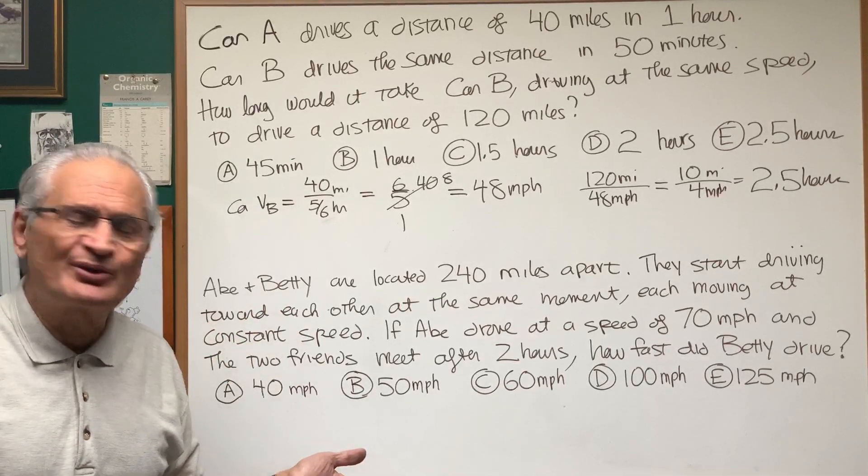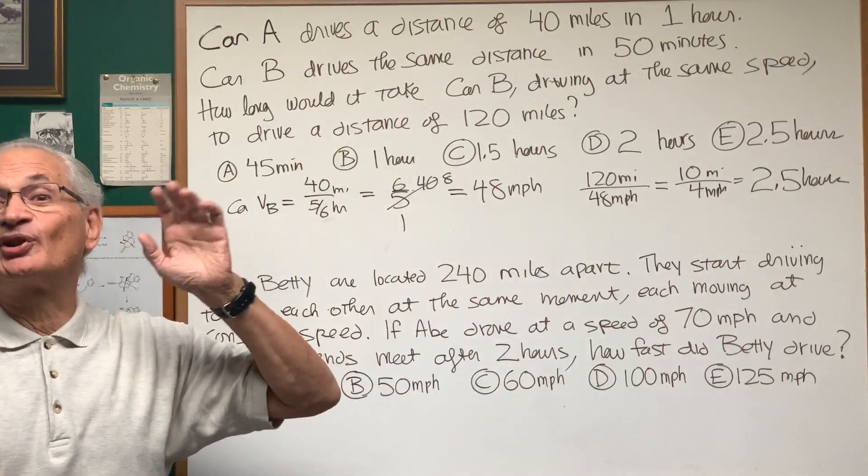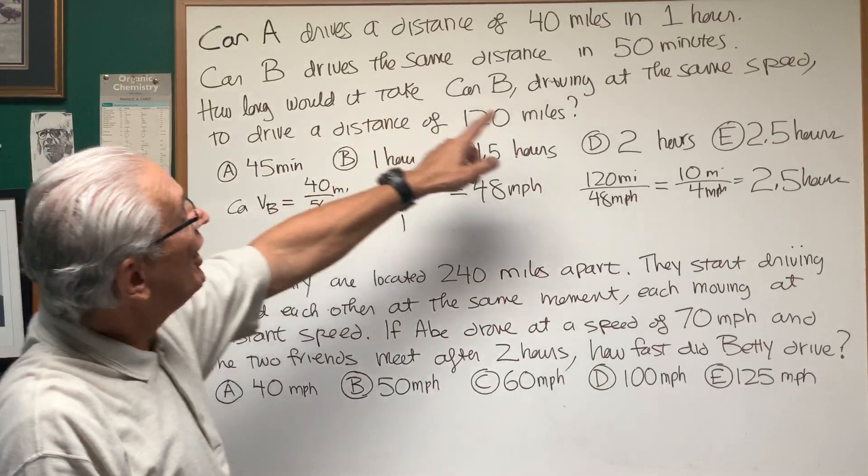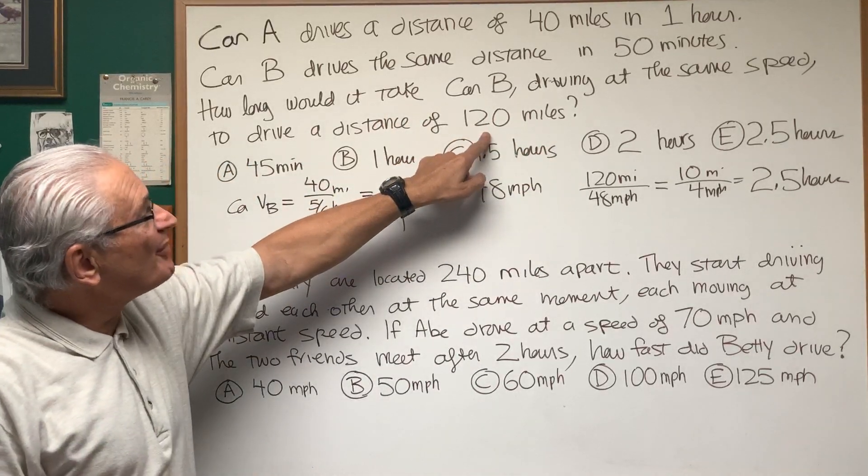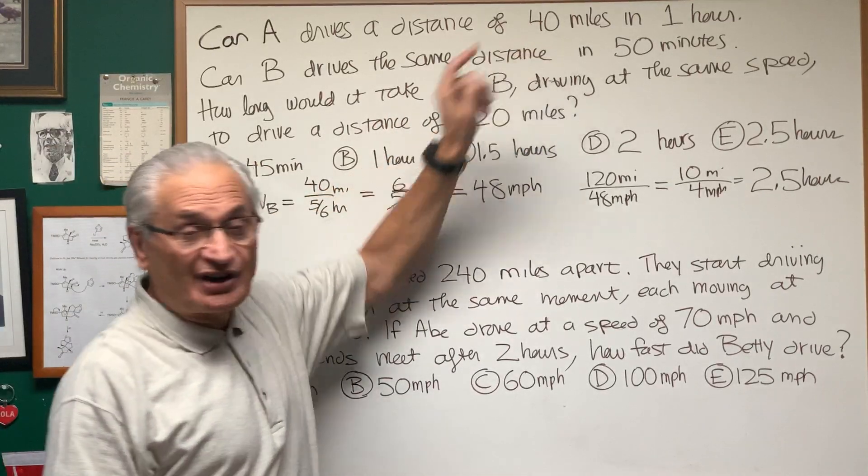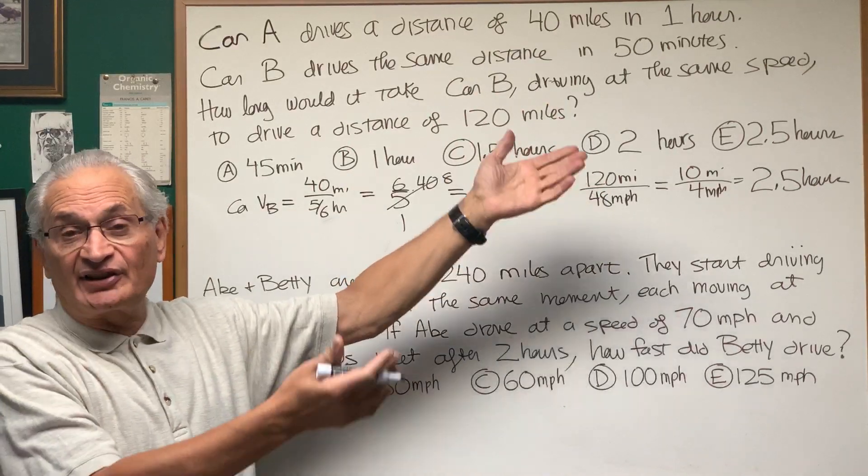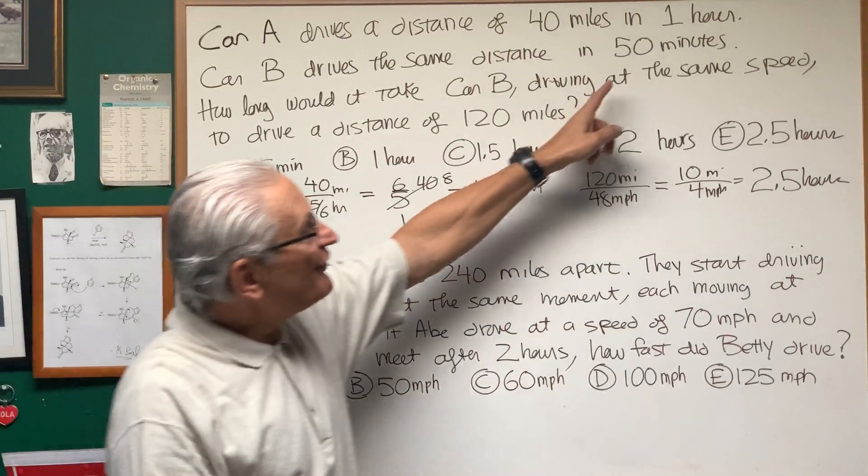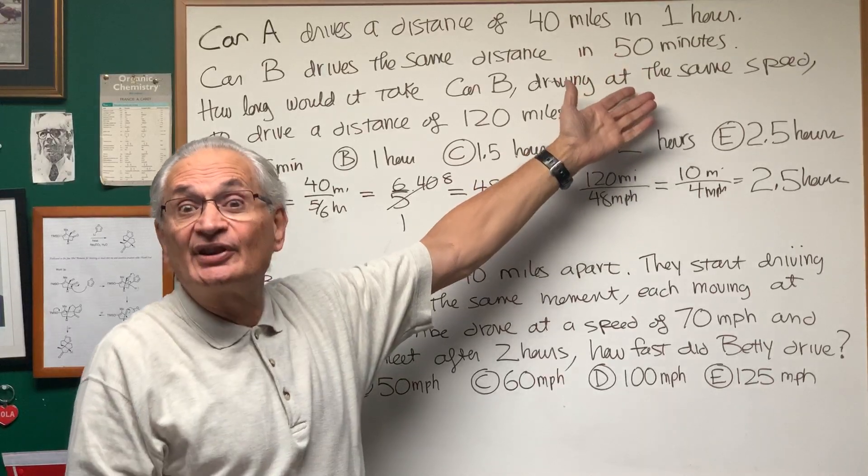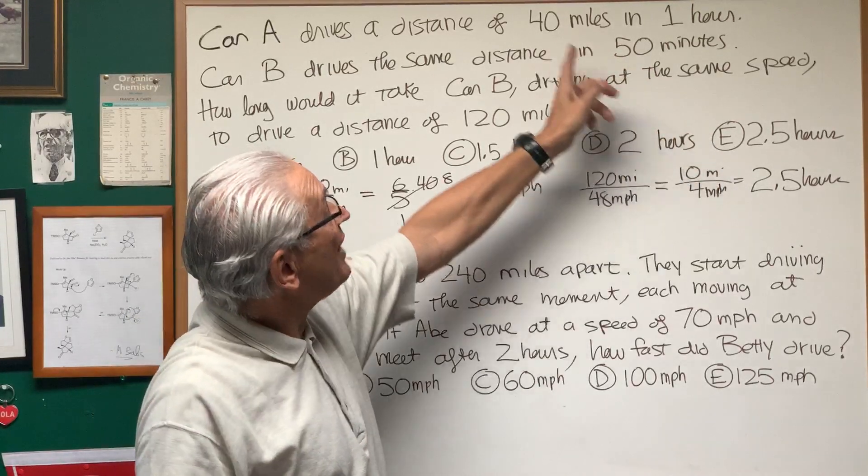Now, there's an easier way to do this. You don't have to go through all this if you're clever, and notice that the distance that Car B is traveling is simply three times the 40 miles that it originally traveled. So therefore, it's going to take three times the length of time it originally took to travel 40 miles.